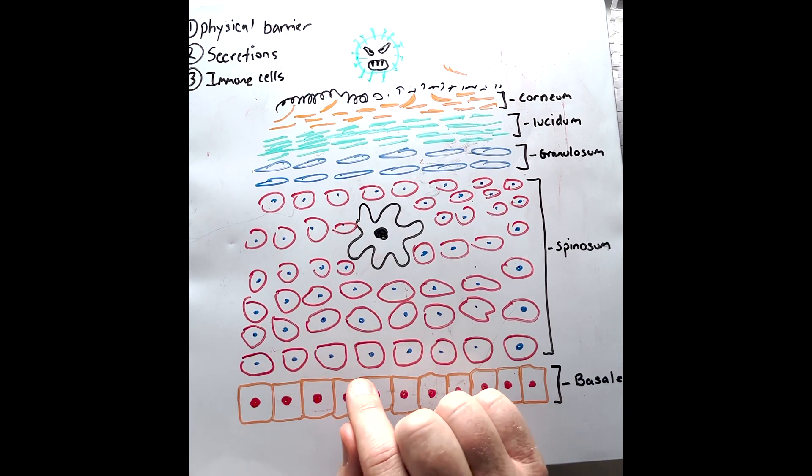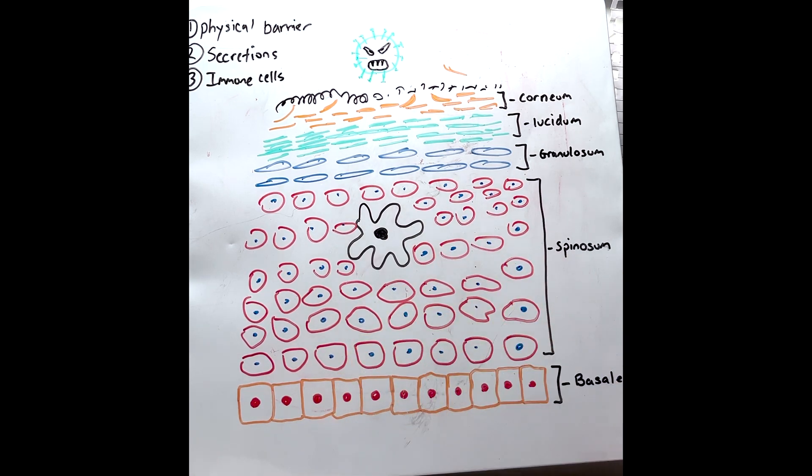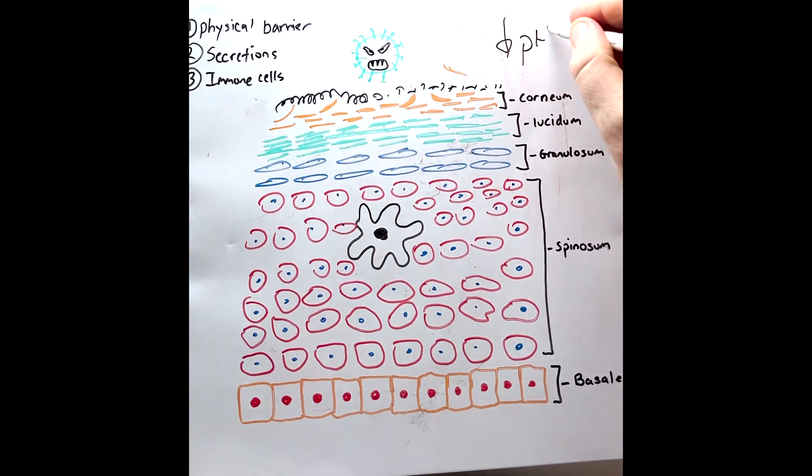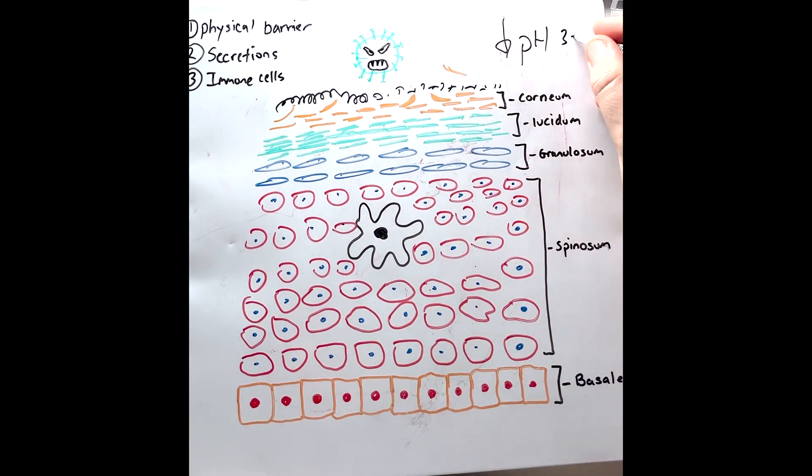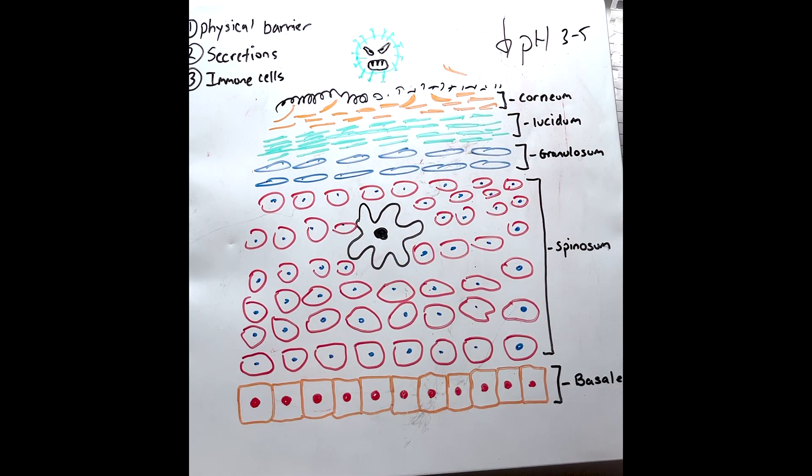Sebaceous glands produce an oily substance known as sebum, which particularly contains lactic acid. This drops the pH on the top of the skin to approximately three to five, making it more difficult for certain microorganisms to live.